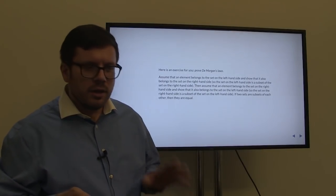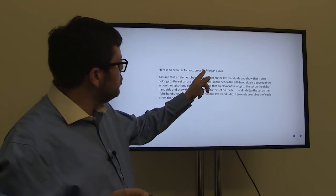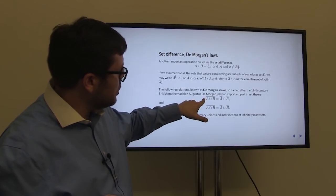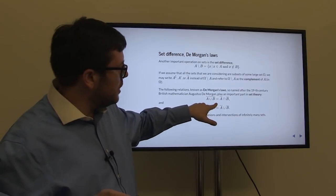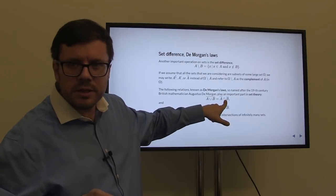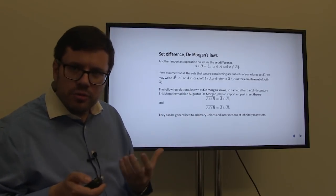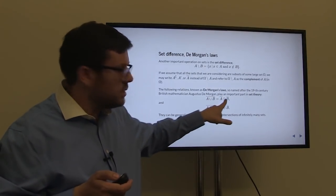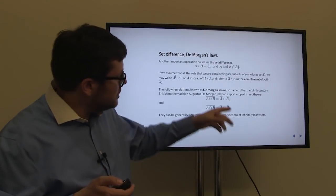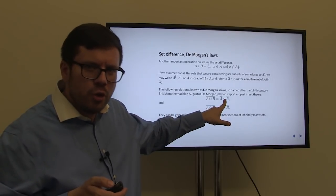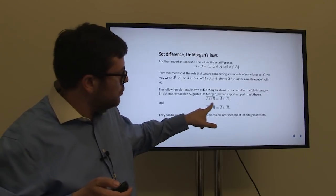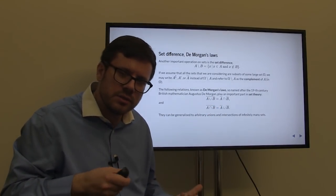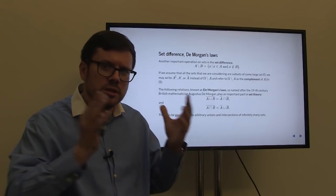Here is an exercise. How would you prove De Morgan's laws? In order to prove that two sets are equal, you assume that a particular element belongs to the set on the left-hand side and deduce it also belongs to the set on the right-hand side — showing the left is a subset of the right. Then assume an element belongs to the right-hand side and show it belongs to the left. Since each is a subset of the other, the two sets are equal.